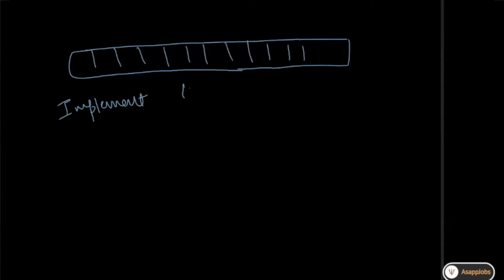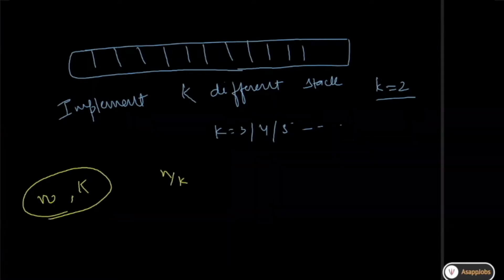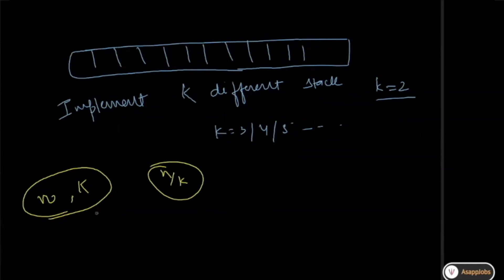You have been given a single array and in this single array you have to implement k different stacks. In my previous question the value of k was equal to 2, but now k can be 3, it can be 4, and so on. So what we can do here is that if I have a size of n and the number of stacks has to be k, what you divide is the array into n by k parts.